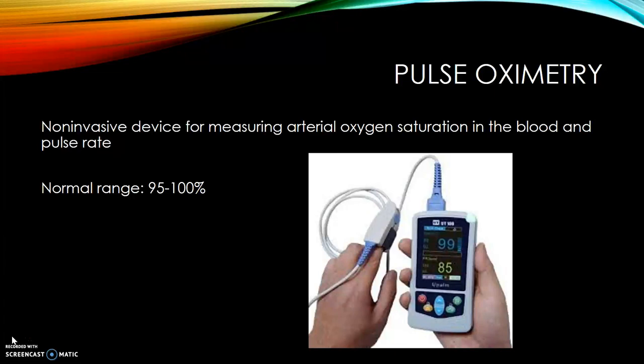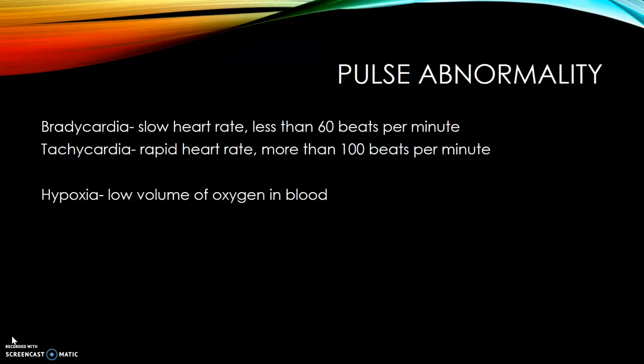Pulse oximetry is a non-invasive device for measuring arterial oxygen saturation in the blood and pulse rate. The normal range is 95 to 100%. Pulse abnormalities include bradycardia, which is a slow heart rate or less than 60 beats per minute; tachycardia, which is a rapid heart rate of more than 100 beats per minute; and hypoxia, which is a low volume of oxygen in the blood.